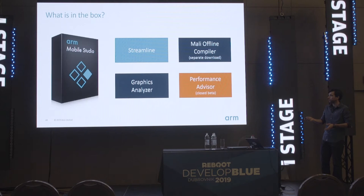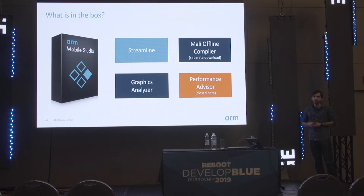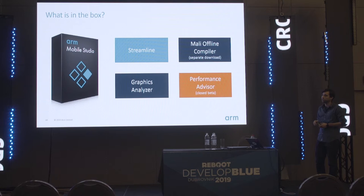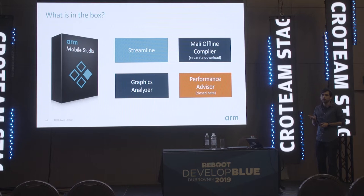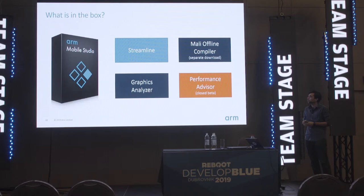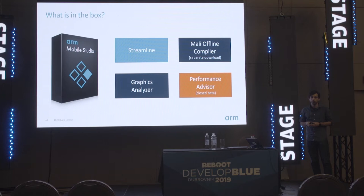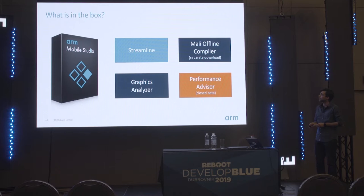ARM Mobile Studio contains four tools, although only two are in the bundle released at GDC: Streamline, our system profiler for CPU and GPU performance; and Graphics Analyzer, our API debugger for both OpenGL ES and Vulkan. As a separate download, we also offer the Mali Offline Compiler for statically analyzing shaders. We are also working on Performance Advisor, coming early next year, which automates tests for continuous integration workflows.